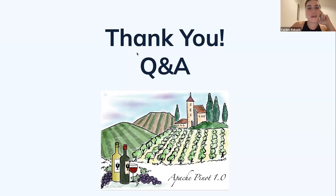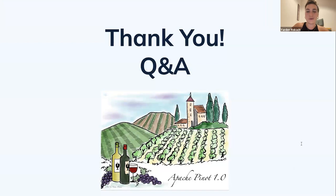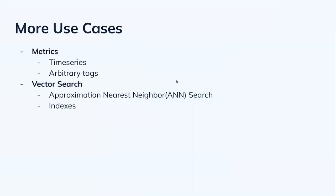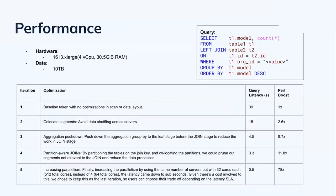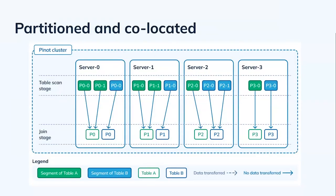We have five more minutes, let's open it for Q&A. Robert, you mentioned you had a few questions. One question around performance and joins: Jackie, the optimizations around co-location and partition-aware joins — does that require the data to be pre-partitioned and pre-co-located before the join? How much data prep work is needed to take advantage of these optimizations?